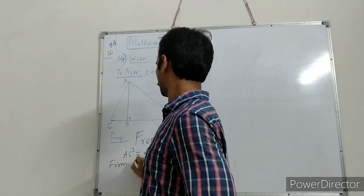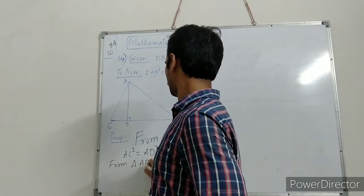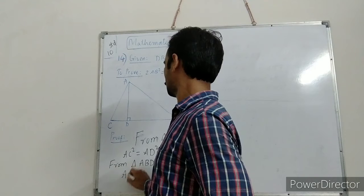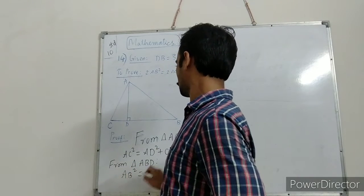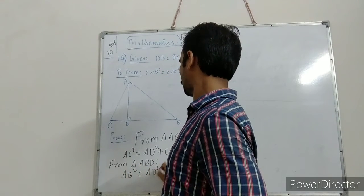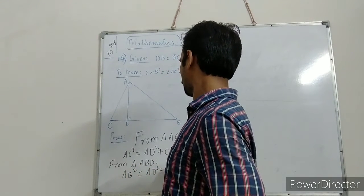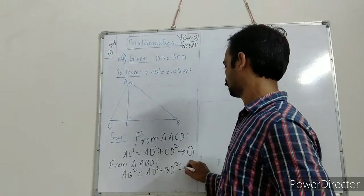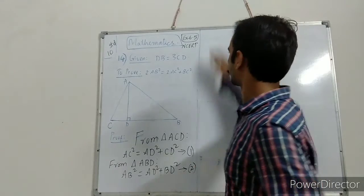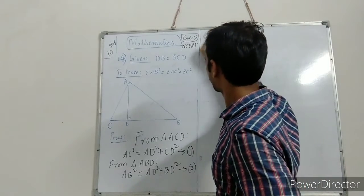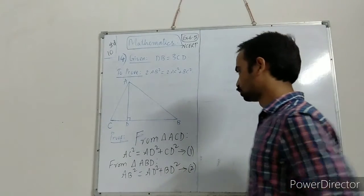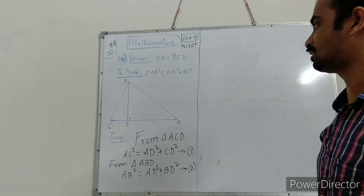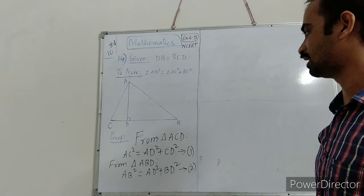From triangle ABD, we can write ab square is equal to ad square plus bd square. Two equations we got — one from triangle ACD and another from triangle ABD.